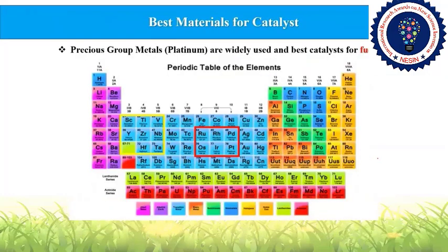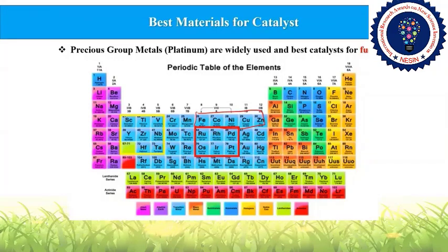Research so far on fuel cells has mainly focused on platinum group metals, which are highly active. Platinum alone and platinum alloyed or in intermetallics with late D-block metals like iron, cobalt, nickel, copper, and zinc showed higher activity, but always suffered from stability issues because the enthalpy of formation is very low. In repeated electrochemical cycles, these materials leach out, and activity and stability degrade after a few cycles.